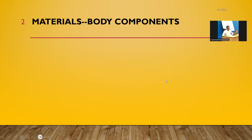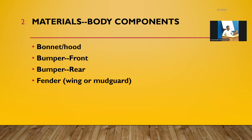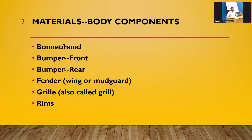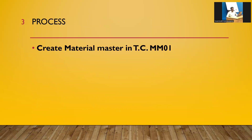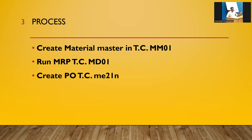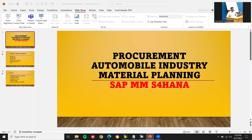Next slide: body components. There are thousands of materials in the automobile industry. I have taken common body components: bonnet, front bumper, rear bumper, fender (mud guard or wing), grill, and rims. These are common across all car models. The process: create material master in MM01, run MRP, create purchase order, do goods receipt, and invoice.